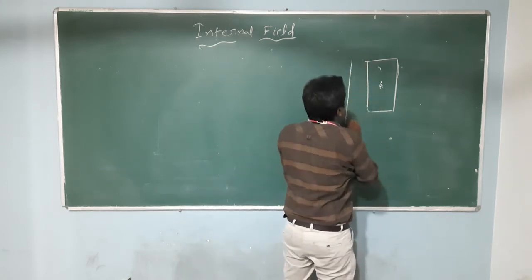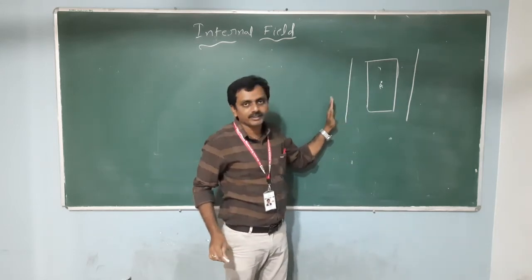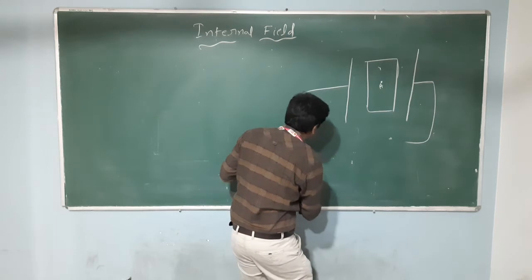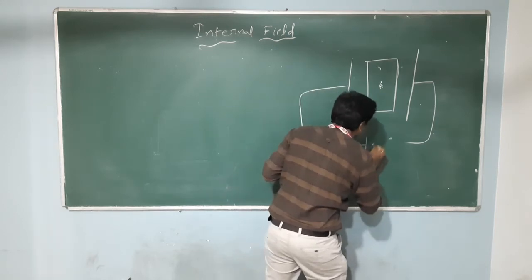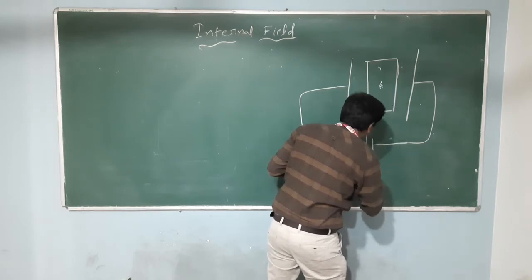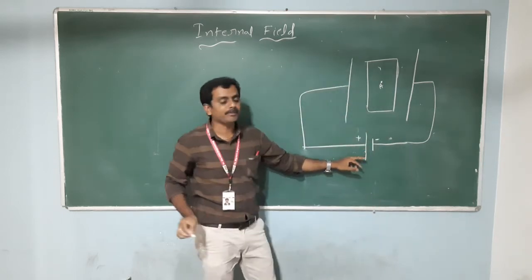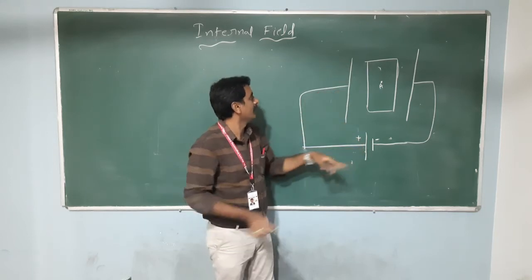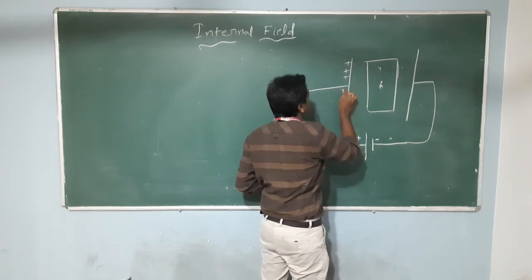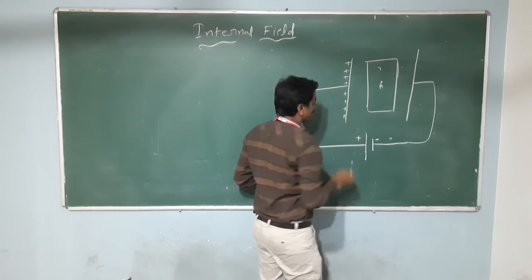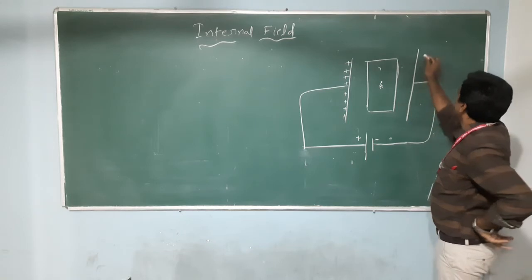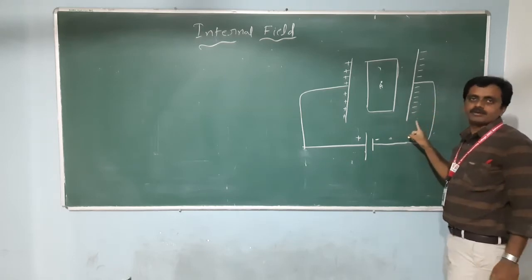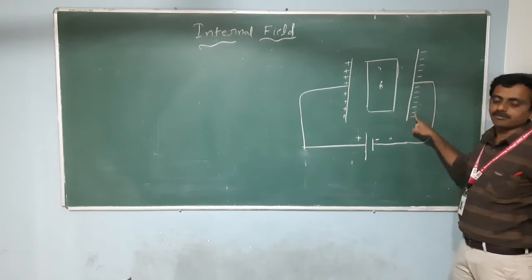In that dielectric material, I am applying the electric field. For that, I am taking one capacitor — that means two metal plates. One metal plate is connected to the positive terminal of the battery and the other to the negative terminal. So positive charge is developed on the positive plate and negative charges are developed on the negative plate.